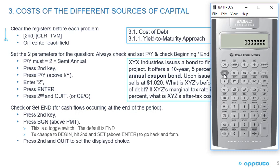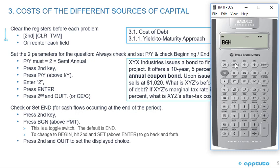To toggle between beginning and end mode: if you're in beginning mode, press second, beginning, second, enter. You can see if you're in beginning mode when it shows on screen. For a bond where the coupon payment is at the end of the period, you need to change back to end mode: second, begin, second, enter, then hit clear. Now you're in ending mode because there's nothing displayed.